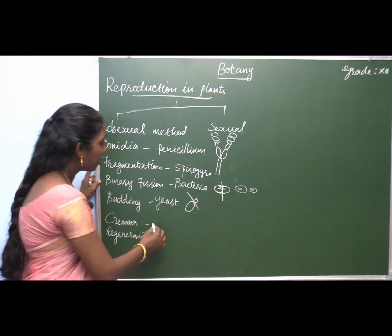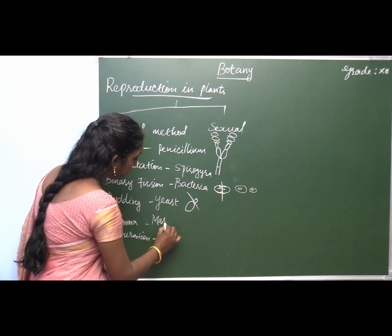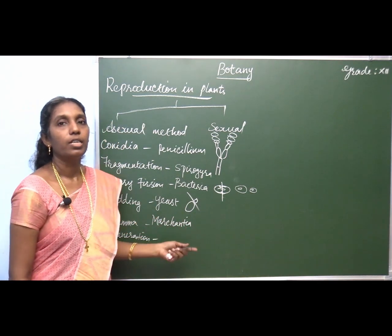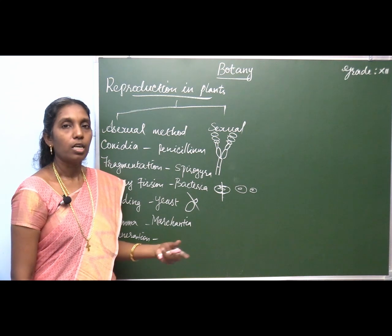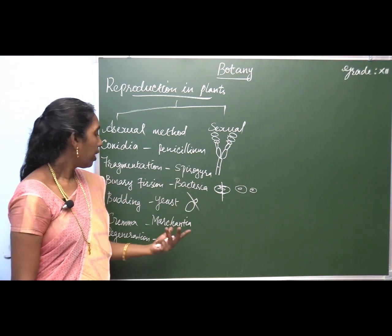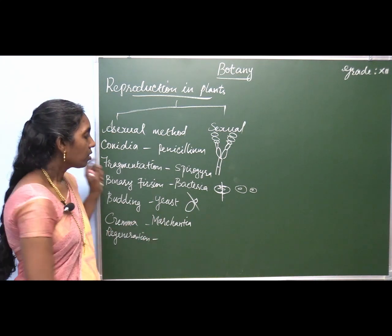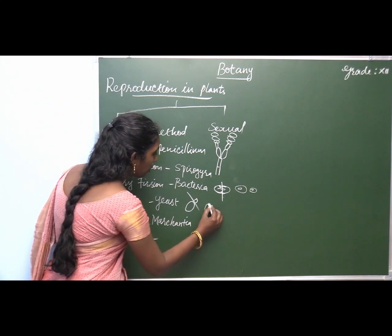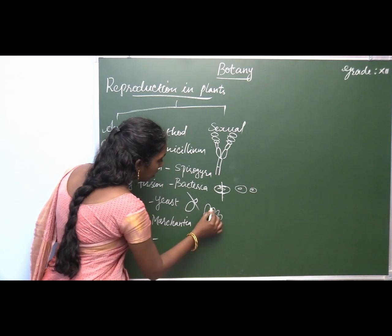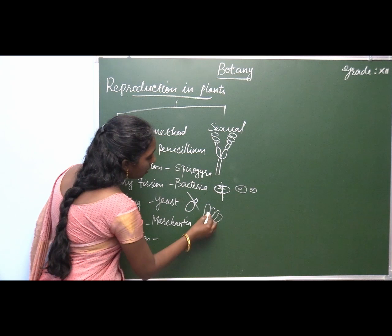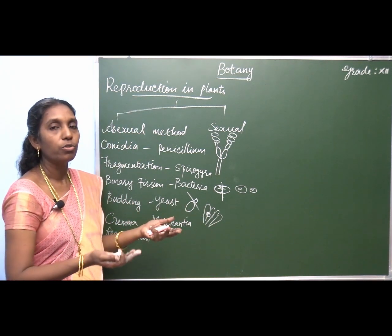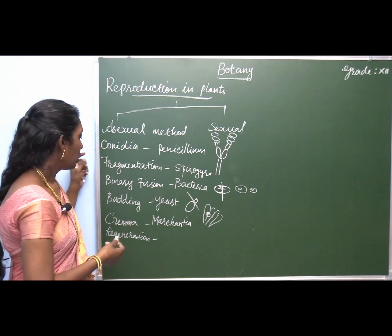Gemma formation is observed in Marchantia, which is one of the bryophytes. There are different lower forms of organisms — algae, fungi, and bryophytes. Marchantia shows a thallus plant body. In this thallus, gemma is formed, and when it is detached from the parental one, it has the ability to develop into an entire species.